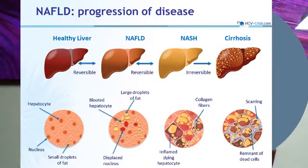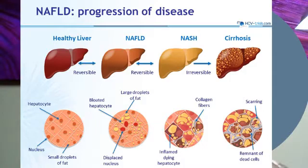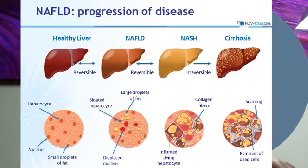When you take a healthy liver, for causes like obesity and diabetes, what happens is there is fat accumulation in the liver. Large droplets of fat start accumulating in the liver, which is called non-alcoholic fatty liver disease or NAFLD. People with NAFLD can progress to what we call NASH, non-alcoholic steatohepatitis, when the fat globules in the liver progress to inflammation and scar tissue, which is called fibrosis.